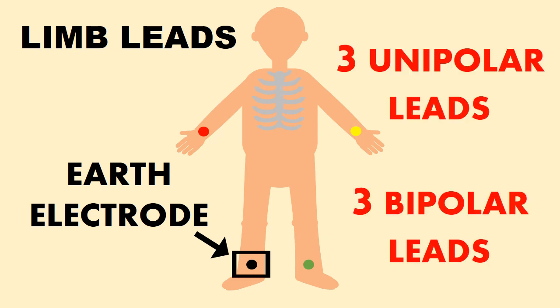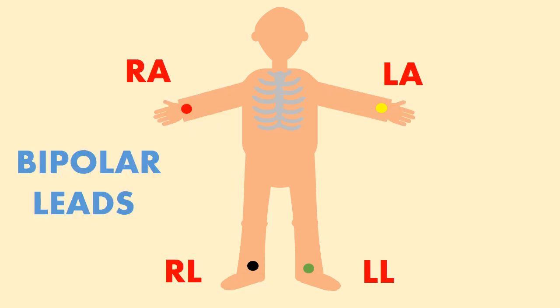Three unipolar leads and three bipolar leads are obtained from these three electrodes, which look at the heart from different angles. In bipolar leads, the electrical activity of the heart is recorded between two of the three electrodes on the limbs.